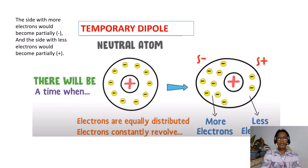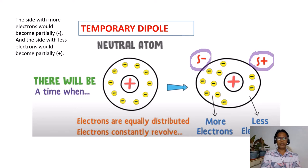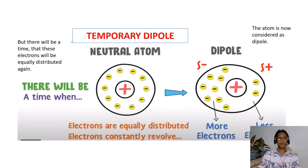The side with more electrons would become partially negative and the side with less electrons would become partially positive, because electrons have negative charges. The atom is now considered a dipole.